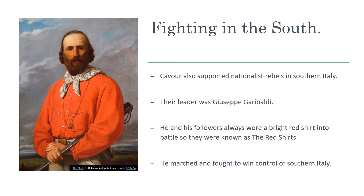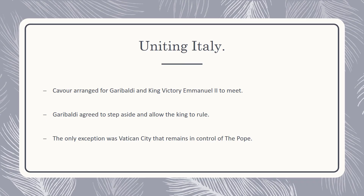Cavour arranged for Garibaldi to meet King Victor Emmanuel II. Garibaldi agreed that the two sides should unite — he stepped aside as leader of southern Italy and allowed Victor Emmanuel II to be king of all of Italy. The only exception was Vatican City, which remains its own independent country controlled by the pope. This is how Italy united and formed into what we know today.